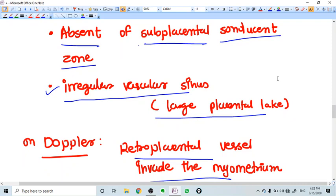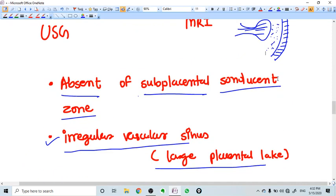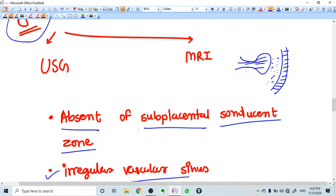Irregular vascular sinuses on Doppler study. The blood vessels are very communicative and you can see these blood vessels via color Doppler like this. This kind of picture you get.